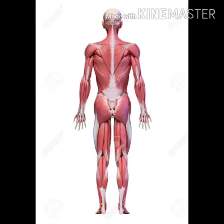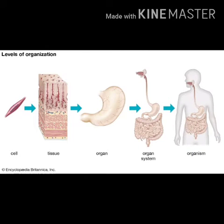For example, we can take some organs in our bodies, like lungs, heart, pancreas, liver, etc. Let's think about the heart. In anatomy, we study the shape, size, and covering of the heart, its position relative to other organs and the chest wall.